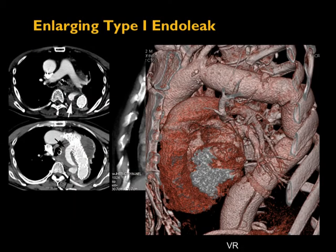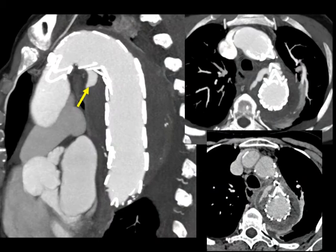Here's a different example — a proximal type 1 endoleak, again a very common location. In this case it was enlarging over time; the aneurysm is quite large on the bottom left image, probably over six centimeters. They were not able to extend this stent further because we're already in the aortic arch — extending more proximally would cover important vessels like the common carotid and innominate arteries. So options in the proximal descending thoracic aorta are limited, and this patient had to go to open repair.